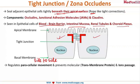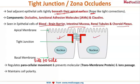Tight junctions also help in maintaining cellular polarity. Because they are so tight, they do not allow any leakage between the cells. These are the functions of tight junctions.